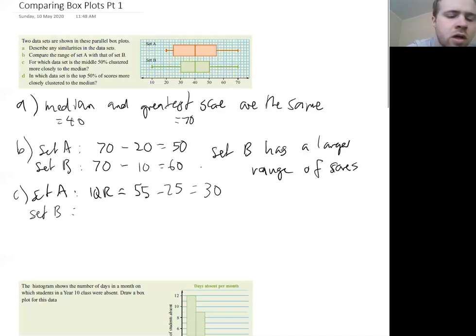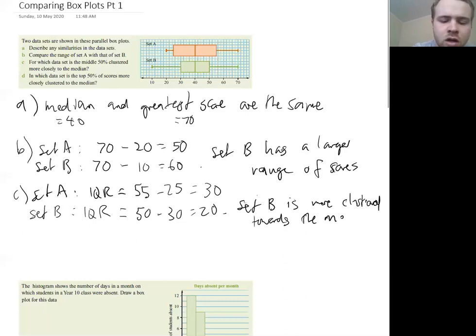So we have an interquartile range of 30 for set A. For set B, the interquartile range is going to be 50 minus 30. So you can see here it's 20. So therefore set B is more clustered towards the median, because that interquartile range, that is the space between the upper and lower quartiles, is smaller. So it's closer to the median in that instance.